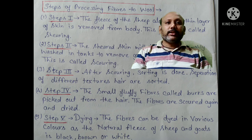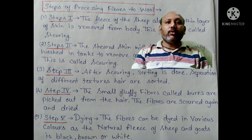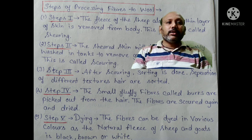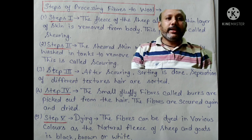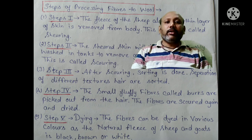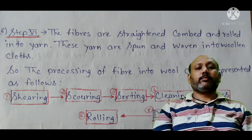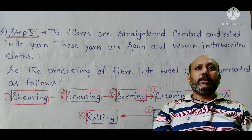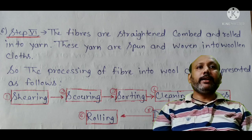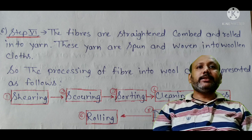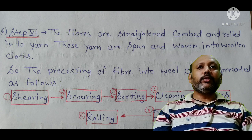Step 4: The small fluffy fibers called burrs are picked out from the hair. The fibers are scoured again and dried. Step 5: Dyeing — fibers can be dyed in various colors, as the natural fleece of sheep and goats is black, brown or white. Step 6: The fibers are strengthened, combed and rolled into yarns. These yarns are spun and woven into woolen cloth.